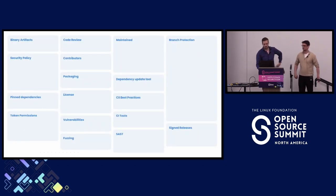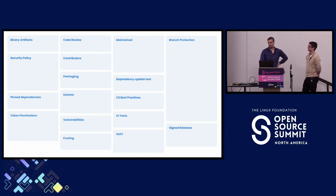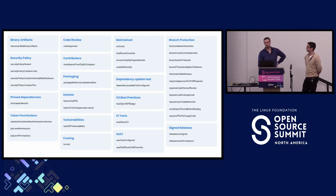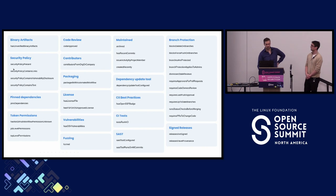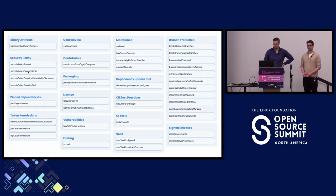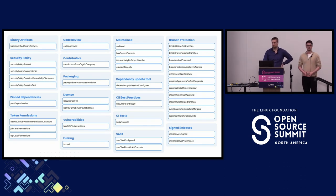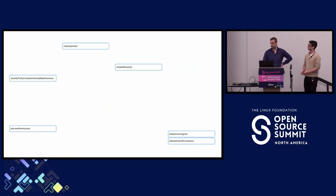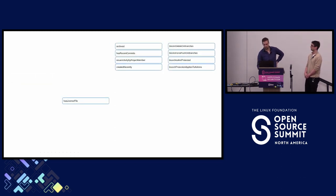To illustrate what we mean by the underlying heuristics of Scorecard: here we have the checks that Scorecard implements, and each check under the hood implements or checks for several heuristics. For example, the Security Policy check checks whether there is one at all, whether it's empty, whether it contains information about vulnerability disclosure, and whether it has any links to emails. What we have done is made these very explicit so that you can consume them without the checks, and you can choose and pick which probes you want to invoke in your analysis.